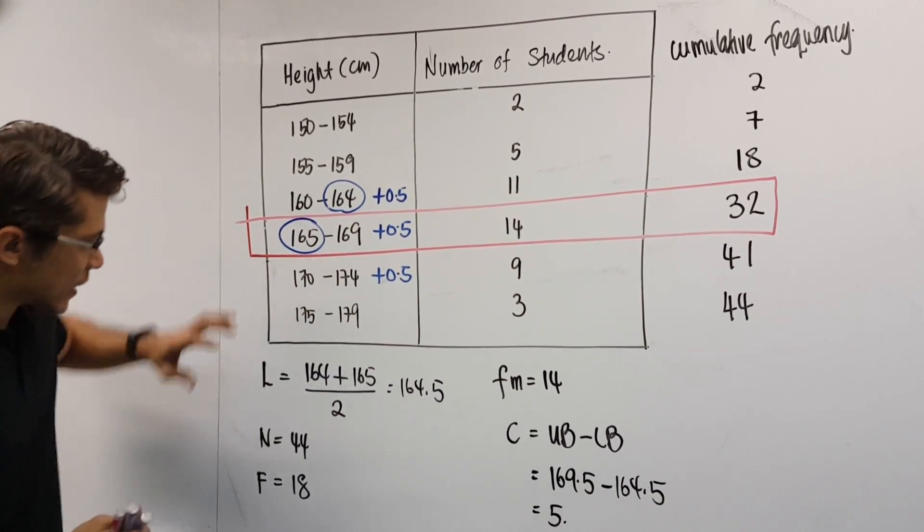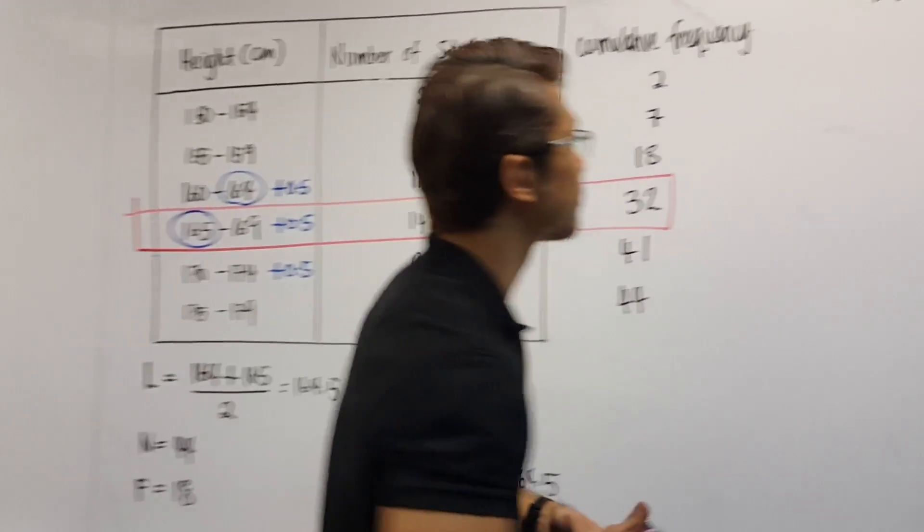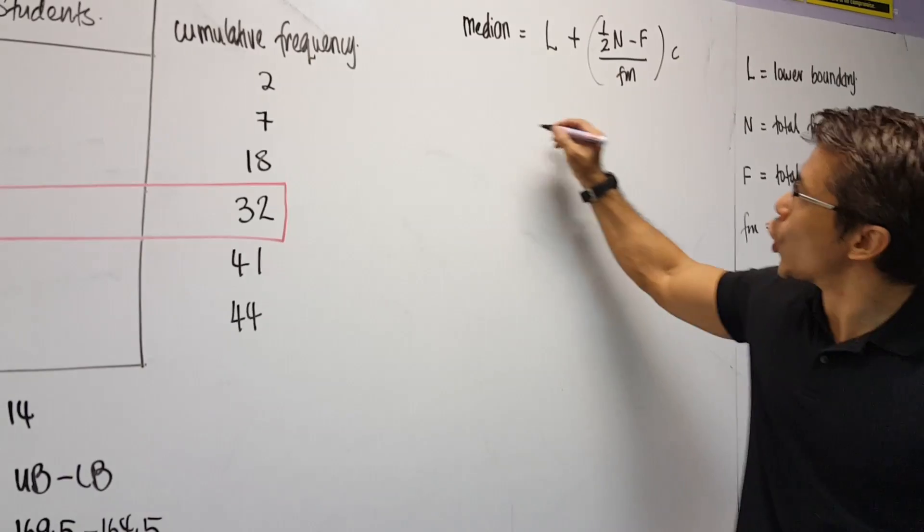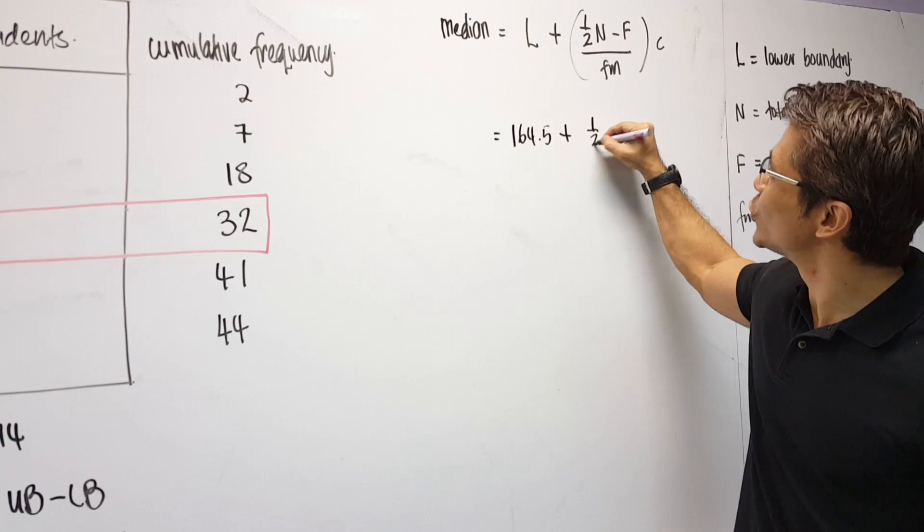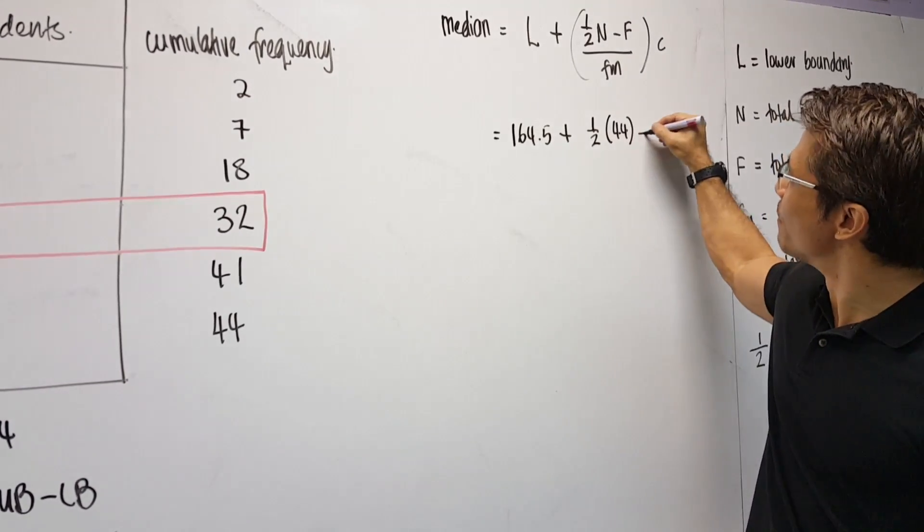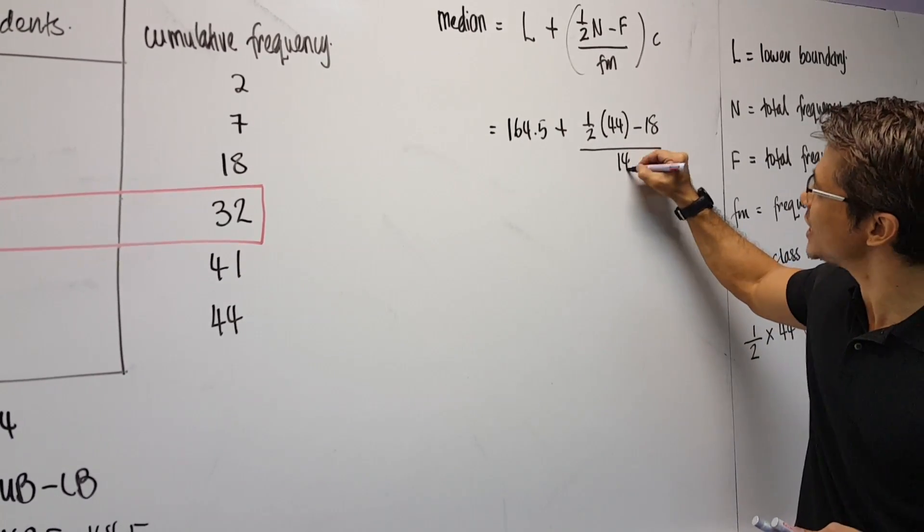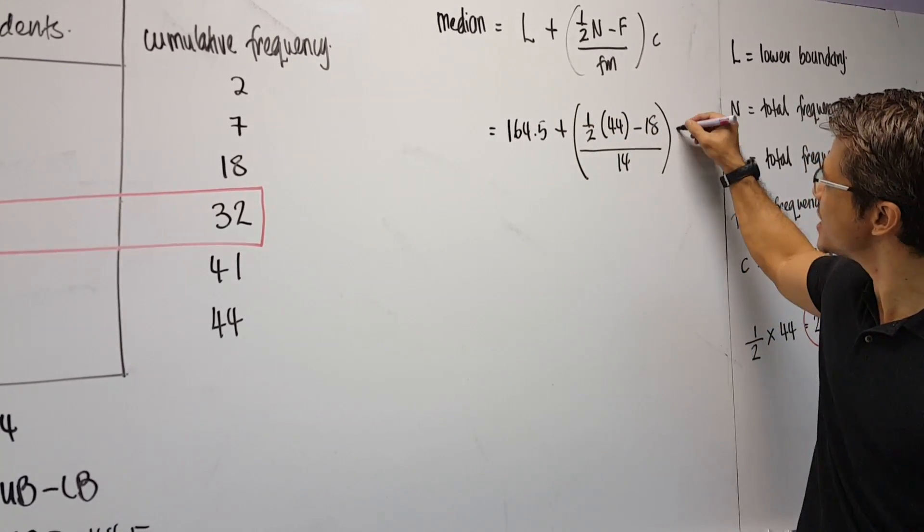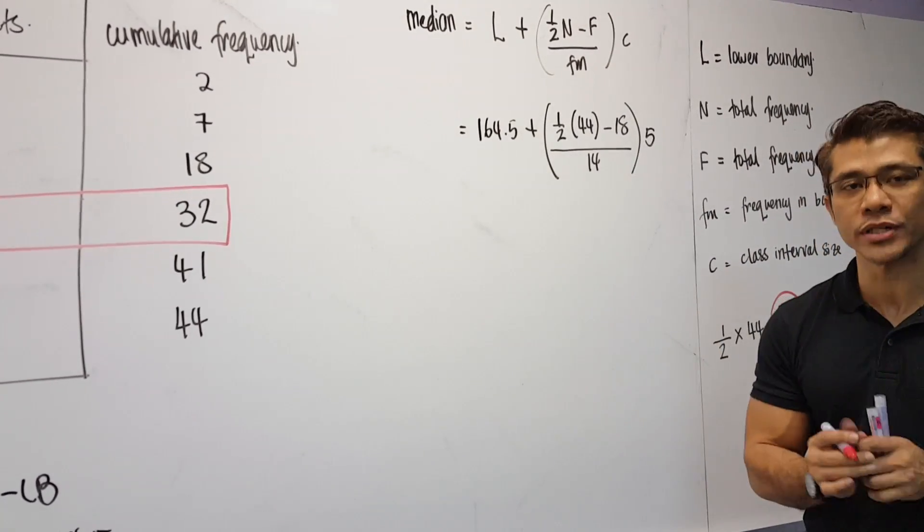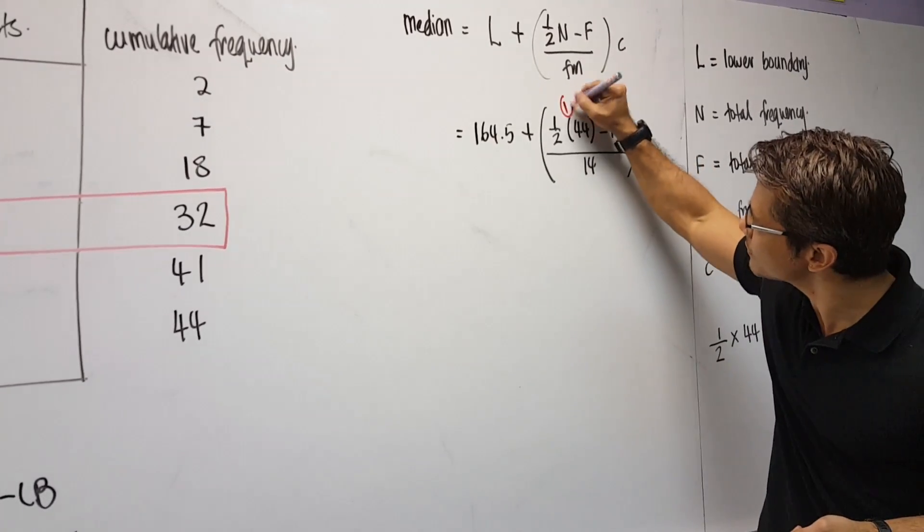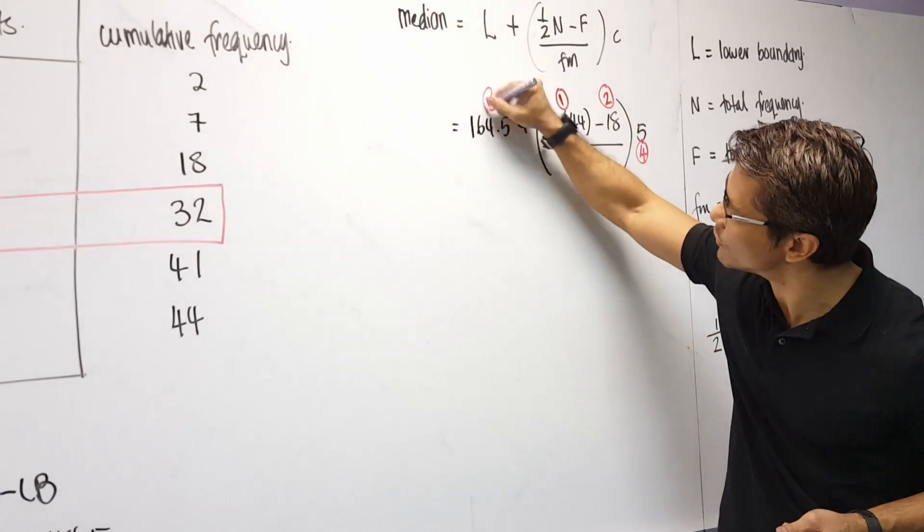Now, what we do now is we take these 5 values and we plug it into our formula. So let's try it. L, lower boundary is 164.5 plus 1 over 2. N is in the bracket. 44 minus F number 18 over fn number 14. Don't forget the bracket. C number is 5. Now, in case you guys have problem calculating, the sequence of the calculation is this. Number 1, number 2, number 3, number 4, and finally number 5.